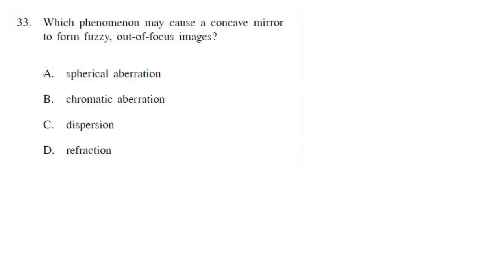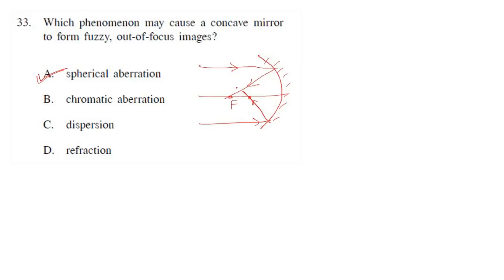Again, we have just discussed spherical aberration. In spherical aberration, due to the improper curvature of the concave or convex mirror, different rays meet at different places. For one ray the focus is here, for another it is there, so the image is not formed at a proper place. All rays are not meeting at the proper place, so the image is hazy and fuzzy — you do not have proper brightness at any particular point.